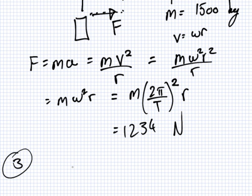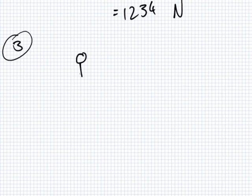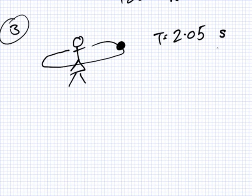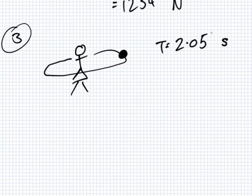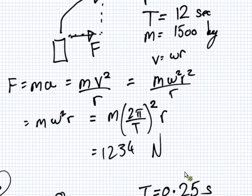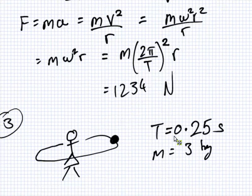A girl swings a three kilogram ball in a horizontal circle of radius two meters. It takes 0.25 seconds for the ball to travel in one full circle. Find the tension in the string. That's one heavy ball, three kilograms.